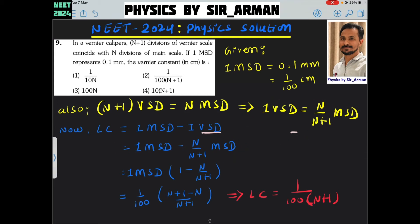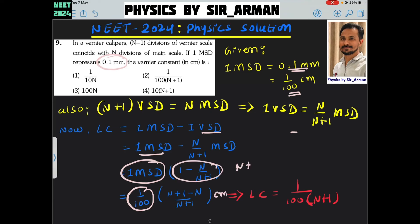This is a very easy question. If you take 1 MSD common, it is 1 minus n by n plus 1. Now, 1 MSD is given as 0.1 mm, which means 1 by 100 centimeter. So it is 1 by 100, and solving: n plus 1 minus n by n plus 1 gives 1 by n plus 1. So LC is 1 by 100 multiplied by 1 by n plus 1.